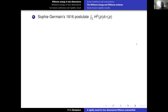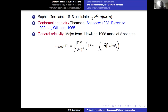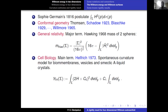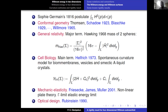In 1916, Sophie Germain postulated a quantity that looks today like what we know as the Willmore energy. There is also an application of the Willmore energy in conformal geometry, through the works of Thomas, Thompson, Schoen, Yau, and Willmore himself. In relativity, the Willmore energy is a major term in what we know as the Hawking mass of two-spheres. In cell biology, we consider the Helfrich model, where the Willmore energy also plays an active role. And in mechanical elasticity and optimal design, you also find the Willmore energy. This motivates researchers to study Willmore energy in 2D.